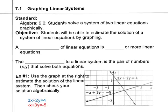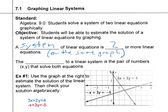Okay, so this is Algebra 7.1 for Conceptual Geometry. Objective: students will be able to estimate the solution of a system of linear equations by graphing. A couple of fill-ins here. A system of linear equations is two or more linear equations on the same graph. And the solution to a linear system is the pair of numbers (x, y) that solves both equations. It's also the intersection of the two graphs.